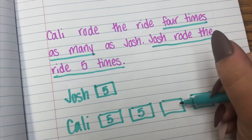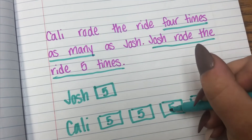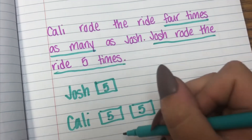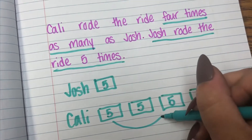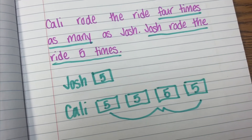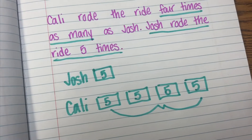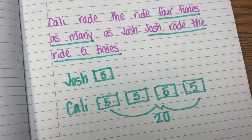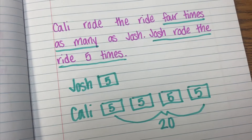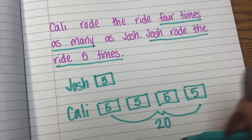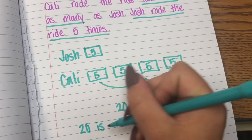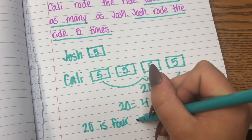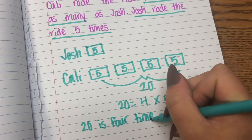I'm going to put a five in each box because that's the number we're comparing. My bar model tells me that I have five, four times. Four times five equals twenty. So twenty is four times as many as five.